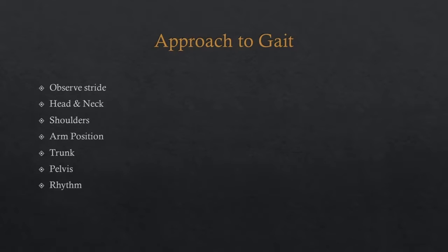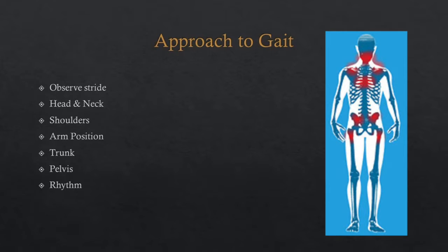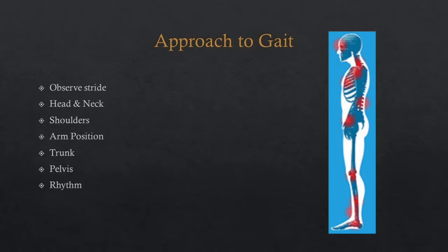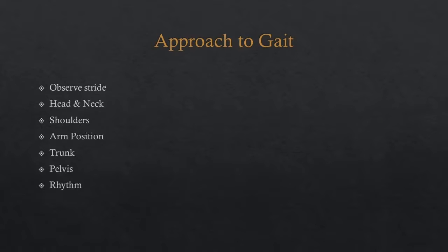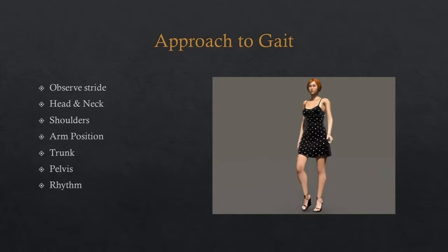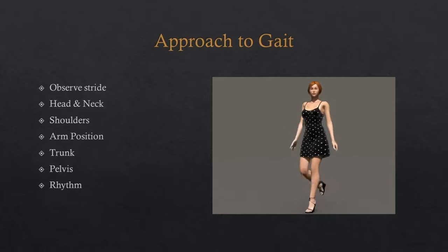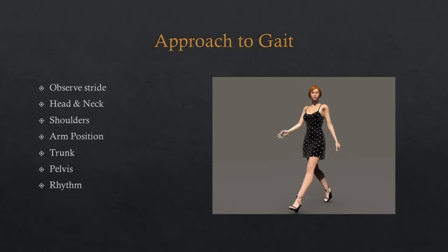In order to comprehensively assess gait, one needs to employ a systematic approach. Here we chose to use a top-to-toe approach. Assessment of gait starts when the patient enters the room and ideally should be viewed for six to eight strides from front, back, and side. General points to consider are the rhythm, the symmetry, any associated pain, and any walking aids.